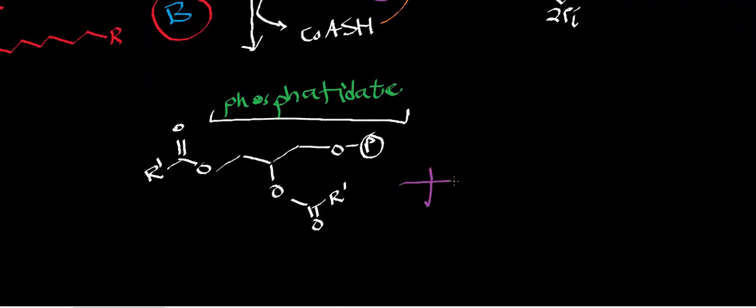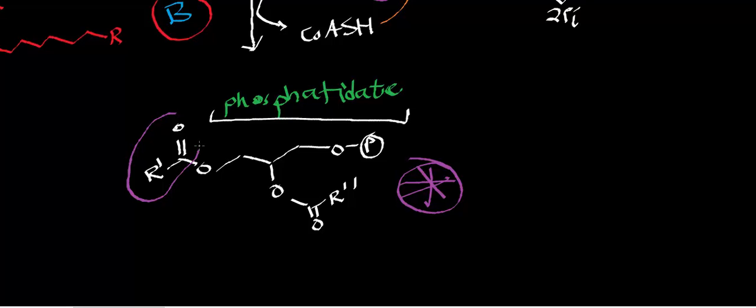After completing both acyltransferase reactions, you generate phosphatidate. Both fatty acyl groups are now esterified to the glycerol-3-phosphate backbone. Phosphatidate can then be used in phospholipid biosynthesis as well as triacylglycerol biosynthesis, which we'll look at in other videos.